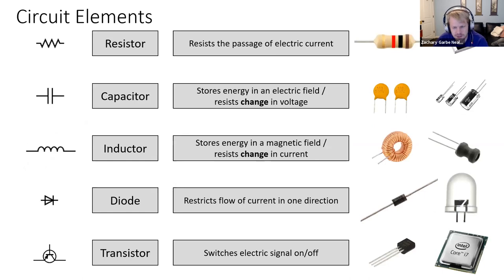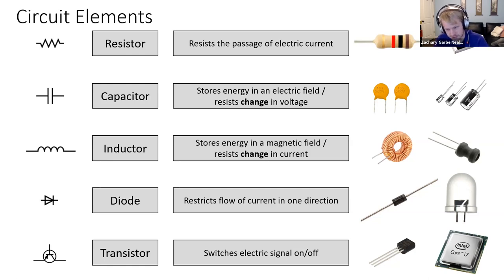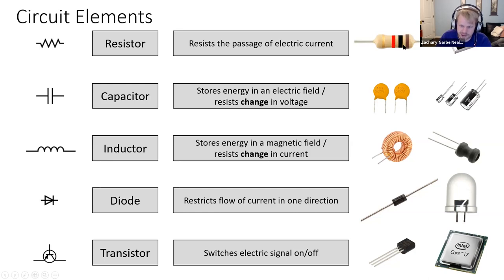Let's go over some common circuit elements. The most common is probably the resistor, a passive element that resists the flow of electric current. Many resistors look like small cylinders with different colored bands — the colors indicate the resistance value. There's a chart that tells you which colors and bands correspond to which values. As a colorblind person, I find it very difficult to differentiate between red and green, which makes this challenging for electrical engineers.